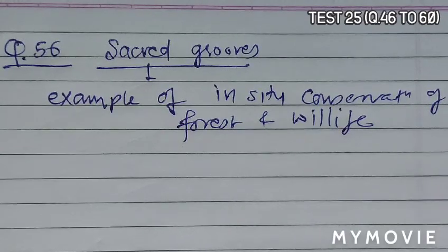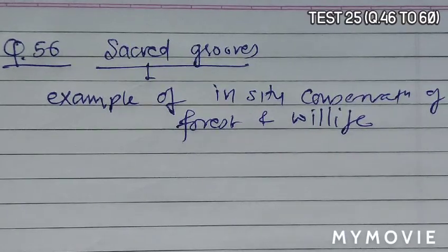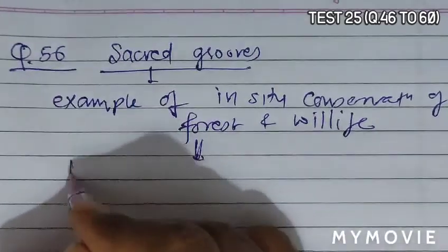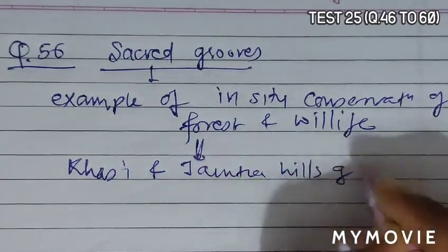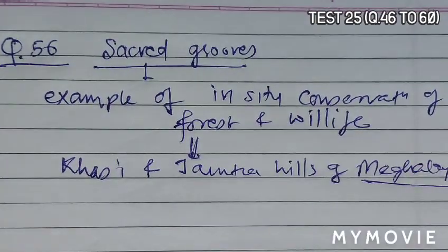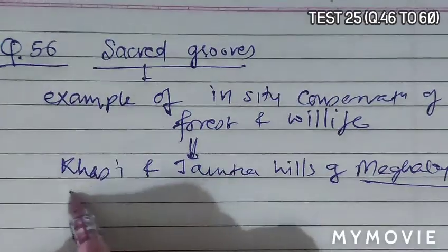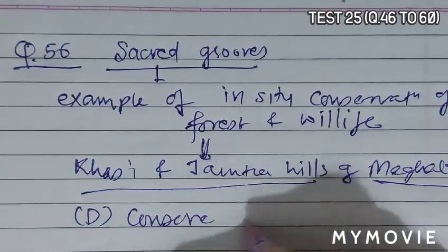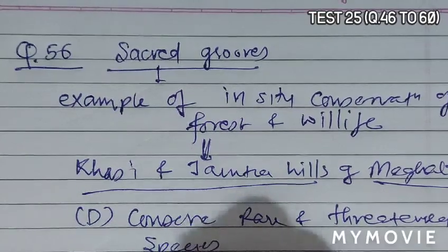They are most undisturbed forest patches which are often surrounded by highly degraded landscapes. Not a single branch is allowed to be cut from this forest. As a result, many endemic species which are rare or have gone extinct elsewhere can be seen to flourish here. Such sacred groves are found in Khasi-Jaintia hills of Meghalaya, Aravali hills of Meghalaya, Western Ghats region of Karnataka, Maharashtra, Sarguja, Chanda and Bastar areas of Madhya Pradesh. So sacred groves conserve rare and threatened species, so D may become the correct answer.